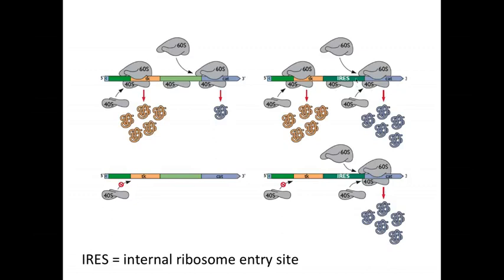So this was called an IRES for internal ribosome entry site. And it's since been used for many experimental applications where you want to make two proteins from a single mRNA. Now, the skeptics at the time said, well, how do you know actually that the ribosomes are binding internally? It could simply be that this sequence allows ribosome transit more efficiently than your control sequence.